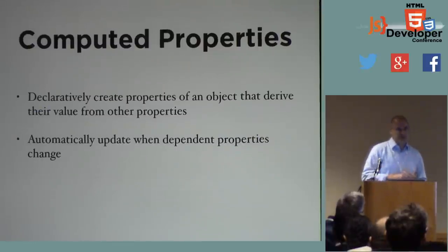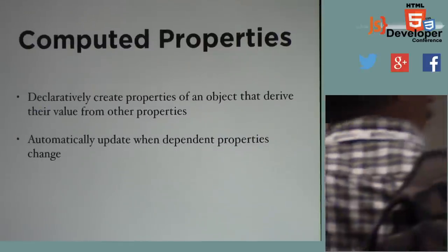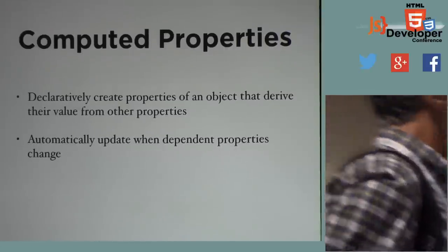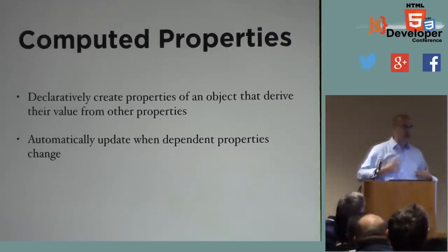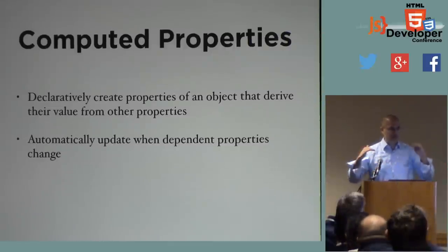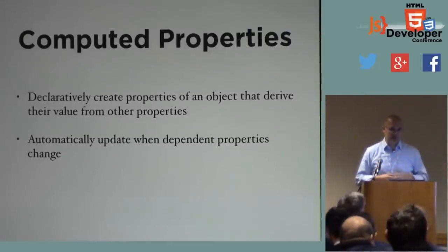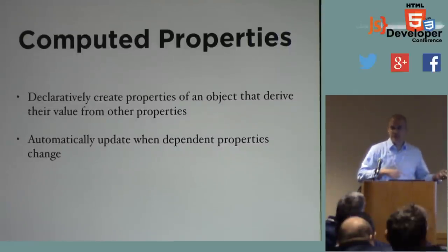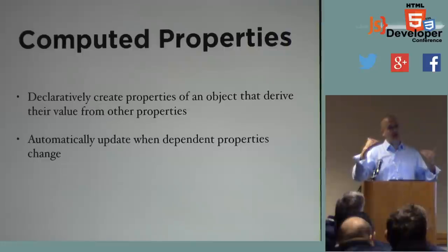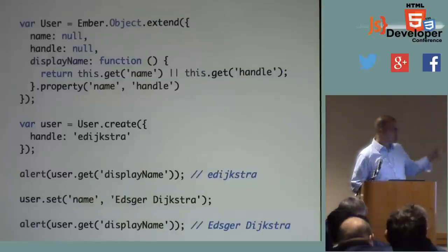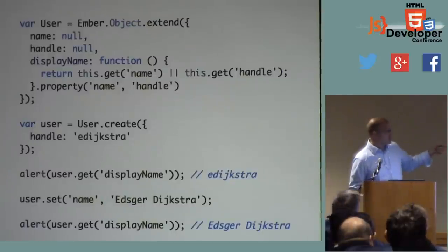Computed properties are the second part of the runtime that I think is really interesting and powerful. Computed properties are a way to declaratively say: I've got a property that derives its value from some other properties on this object. This happens using observables — computed properties automatically change when other properties change.